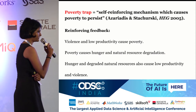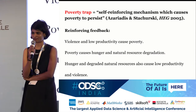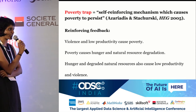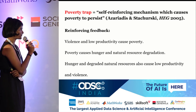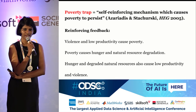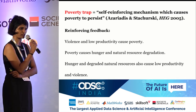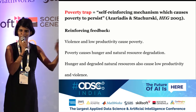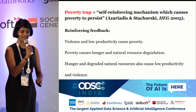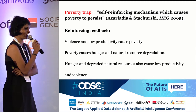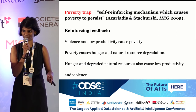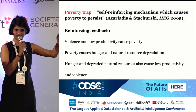Introducing the most important concept: the poverty trap. It's a very vicious cycle. Violence leads to low productivity, which causes poverty. When there is poverty, there's hunger, nobody does agriculture, and there's degradation in natural resources. And obviously, hunger will instigate violence. So this is a vicious trap.